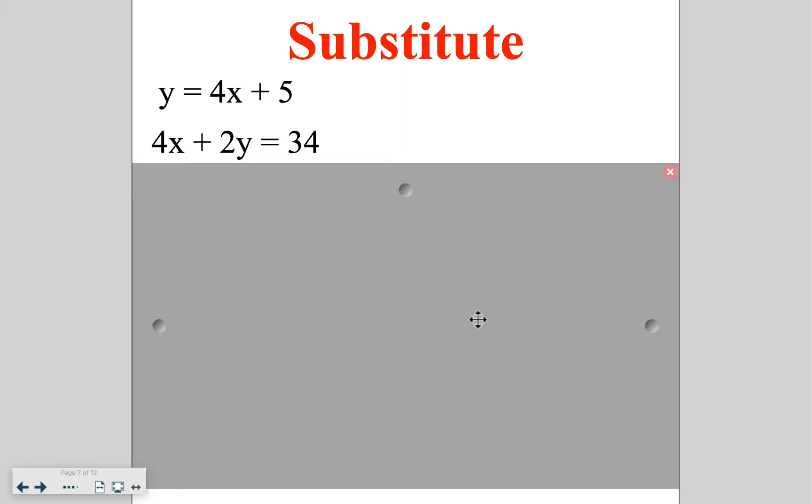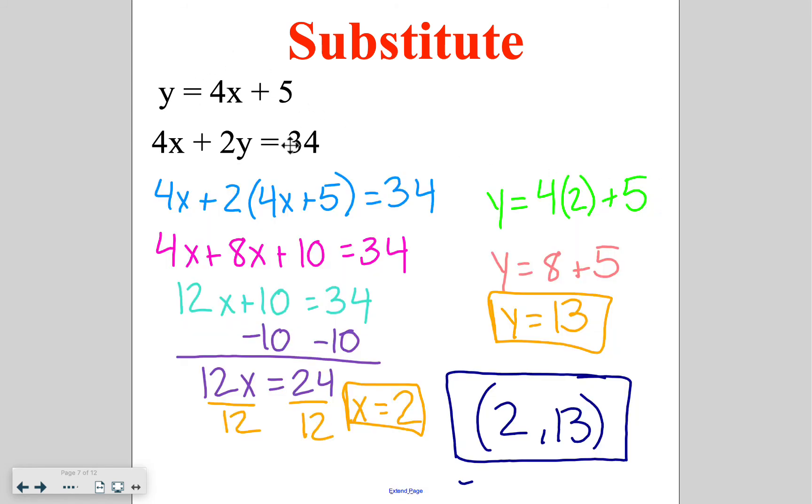Go ahead and try this one on your own. Once again, you're substituting in for the variable y. Distributing, combining your like terms, subtracting and dividing to get you an answer of 2 for your x. You plug that back in and simplify to get 13 is y, giving you a final answer of 2, 13 as the point of intersection.